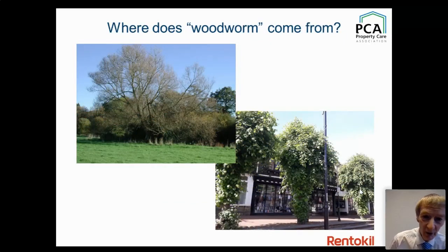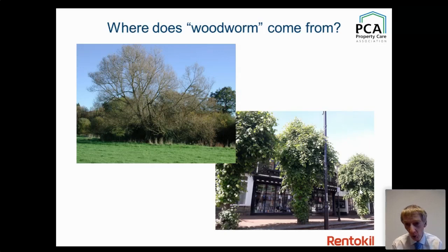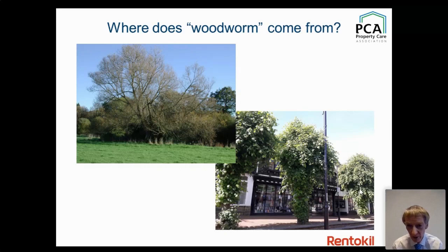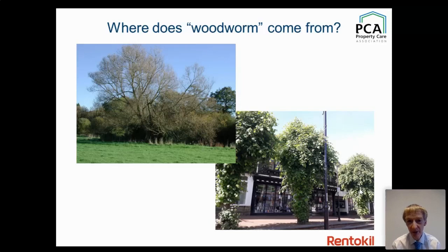Where does woodworm originally come from? Researchers seeking Death Watch larvae use crack willow pollards or oak pollards — when they start to decay, that's where you find Death Watch beetle and common furniture beetle. If those pollards were to start decaying, it's only a short flight into a nearby timber-framed building. That's how they originally came into our buildings; nowadays it's often because we move materials from one place to another.